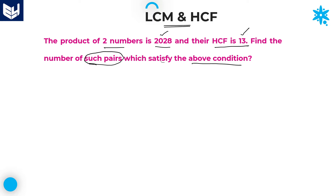We need to find the number of such pairs which satisfies these two conditions. To solve these kinds of problems, especially when calculating number of pairs, whatever HCF is given — if HCF is 13 — then automatically the two numbers must be multiples of the HCF. Because if we are getting HCF as 13, definitely those numbers are multiples of 13. Then only it is possible to get HCF as 13.